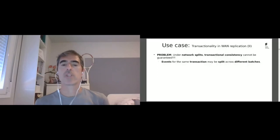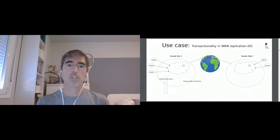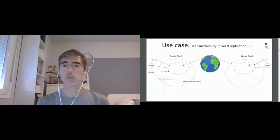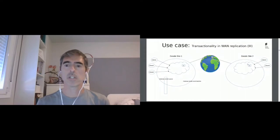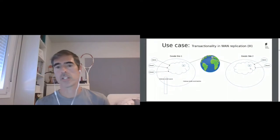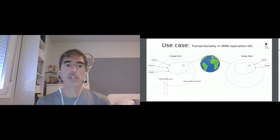Let me illustrate this with a figure. Let's imagine we have two Geode sites connected via a wide area network — one site in North America and another one in Europe. This Geode site has three clients connected to it, and the other site has two clients. The cloud here represents the cache servers hosting the data. Object X, for example, is hosted in this site, and as you can see, this same object is also hosted in the other site because these two sites are kept in sync by the WAN replication feature. Now let's imagine the clients start to send operations to site one. The first client will execute a transaction involving three objects: A, B, and C. The second client will execute a transaction involving objects D, E, and F.